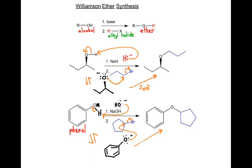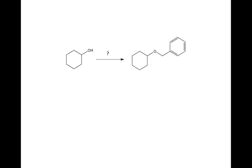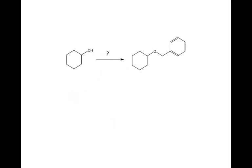That is the Williamson ether synthesis — a very simple reaction to master. For homework, supply the correct reagents to synthesize the product shown, starting from cyclohexanol. Also show the complete mechanism for that transformation. For the second example, again supply the reagents to complete the transformation and show all steps of the mechanism. You can turn in that assignment and bring it to class on Monday.